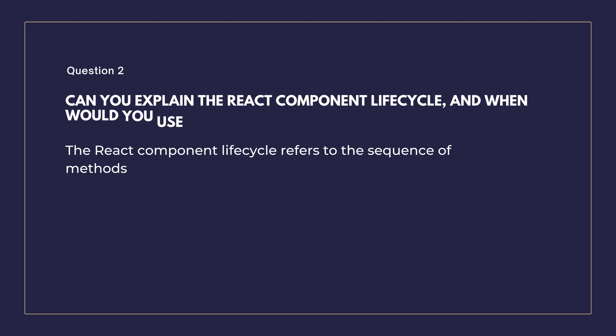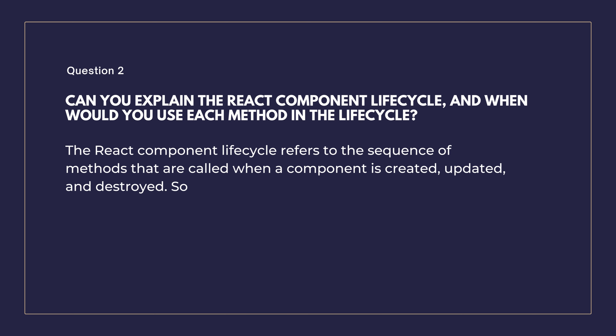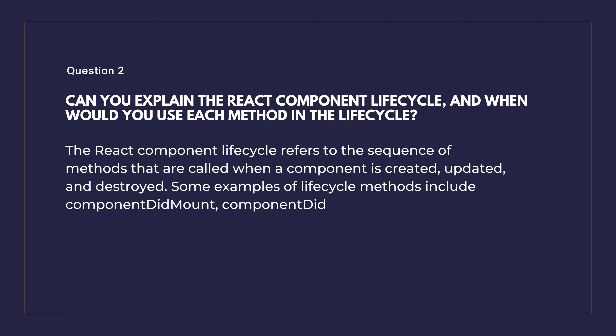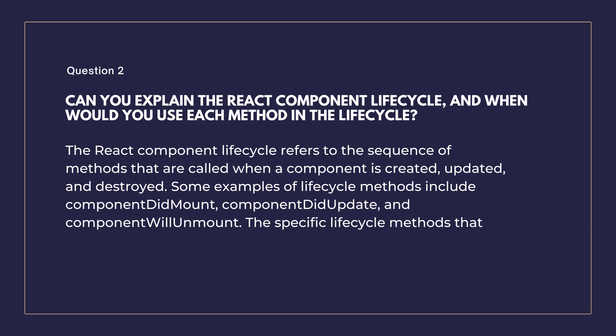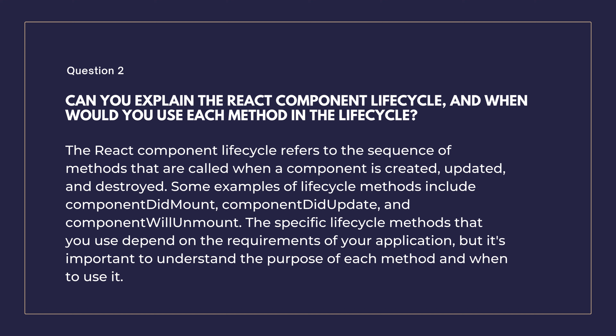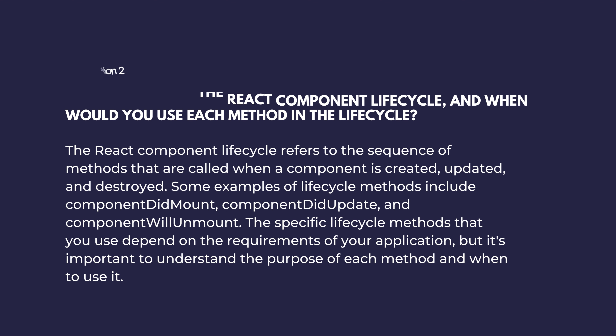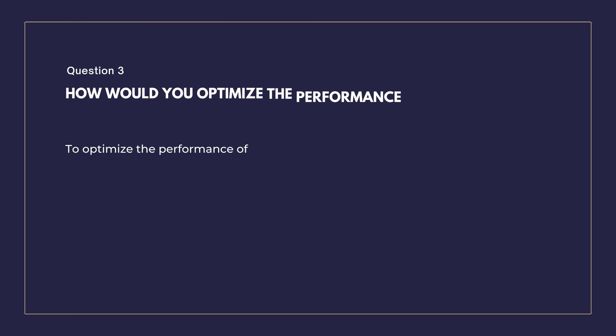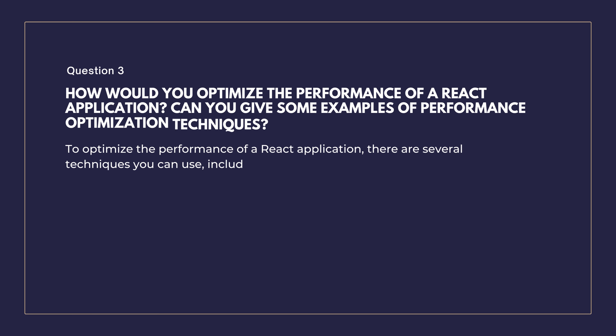Can you explain the React component lifecycle and when would you use each method? The React component lifecycle refers to the sequence of methods that are called when a component is created, updated, and destroyed. Some examples of lifecycle methods include componentDidMount, componentDidUpdate, and componentWillUnmount. The specific lifecycle methods you use depend on the requirements of your application, and it's important to understand the purpose of each method and when to use it.